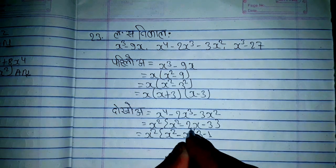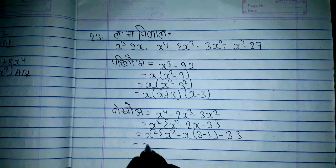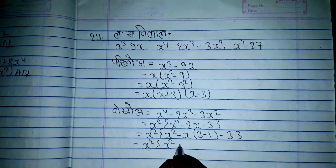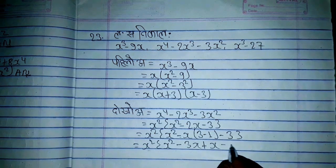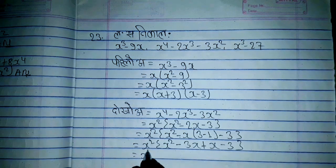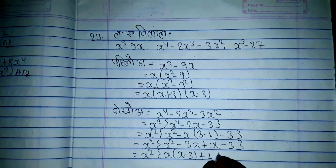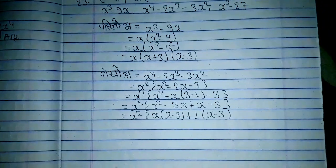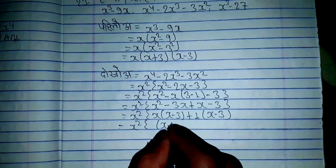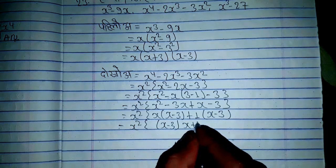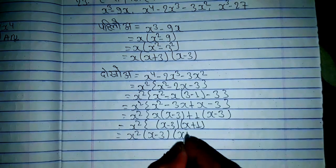3x minus 3x minus 3x plus 2, minus x² minus 3x, plus x minus. x² plus 2x³ minus x, plus x minus, x minus. x² is common, and x minus 3 is the common factor, giving x plus 1.